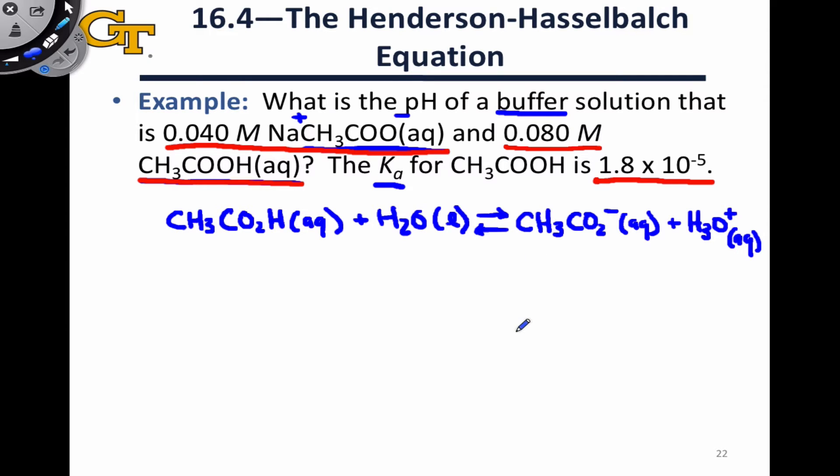To find the pH of this solution, we're essentially doing an ice table sort of problem, like we've done previously in the previous chapter on equilibrium. The only difference here, and it's not necessarily really a big difference, but the important thing to notice is that we have amounts initially of the conjugate base and the acid.